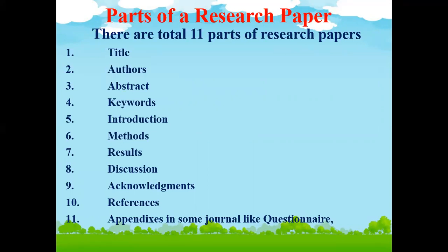There are total 11 parts in any research paper — scientific research papers and periodical articles. Those are: title, authors, abstract, keywords, introduction, methods, results, discussion, acknowledgement, references, and appendixes in some journals.